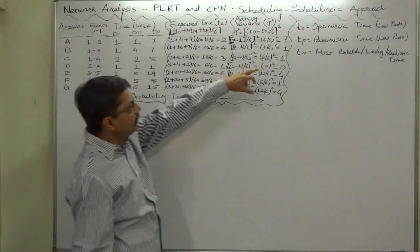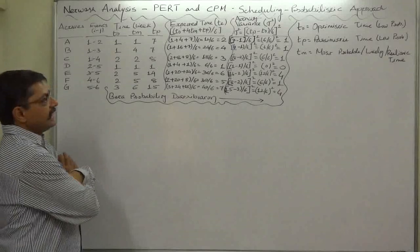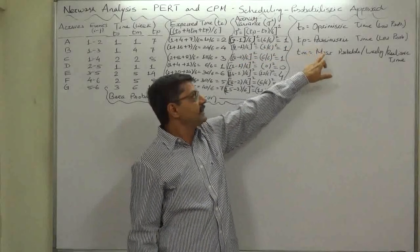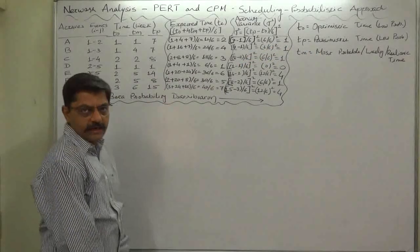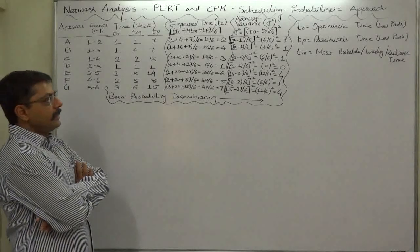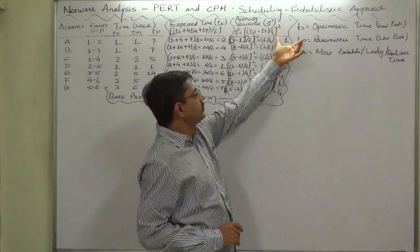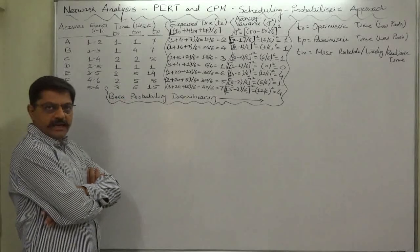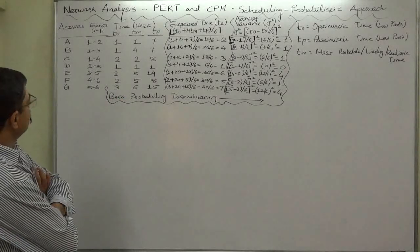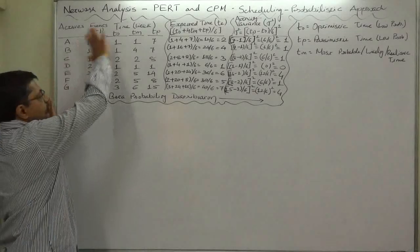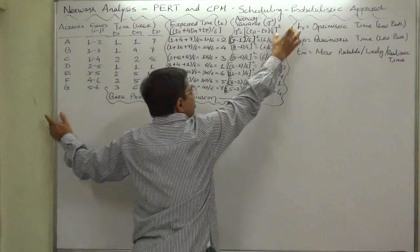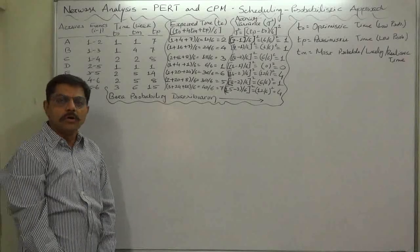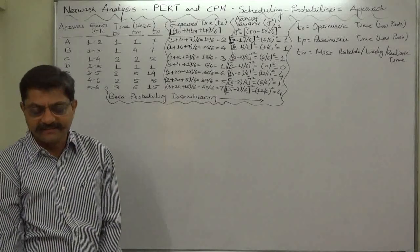Now on the basis of these durations we can draw a PERT chart or network. In the next lecture we are going to draw the network for this project taking the expected time as the duration of each activity, and we shall also determine the critical path. Thank you very much.